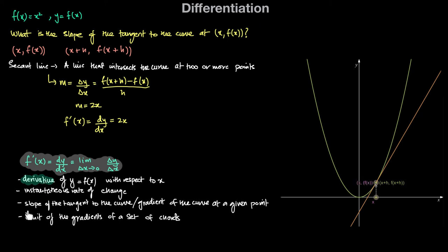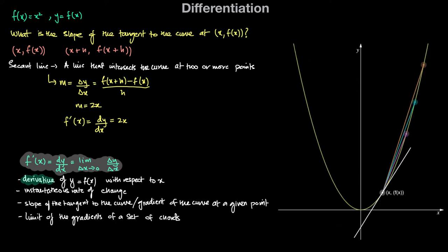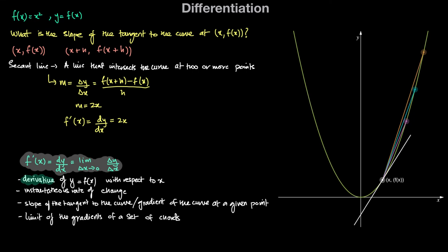The derivative can also be thought of as the limit of the gradients of a set of chords. A chord is simply a line segment that connects two points on the curve. What we're saying is we want the delta x between the two points to get very small. If you move the second point closer to the point (x, f(x)), the gradient of the chord gets closer to the gradient of the tangent. When delta x is almost equal to zero, we can say the gradient of the chord equals the gradient of the tangent — or the gradient of the curve — at (x, f(x)).